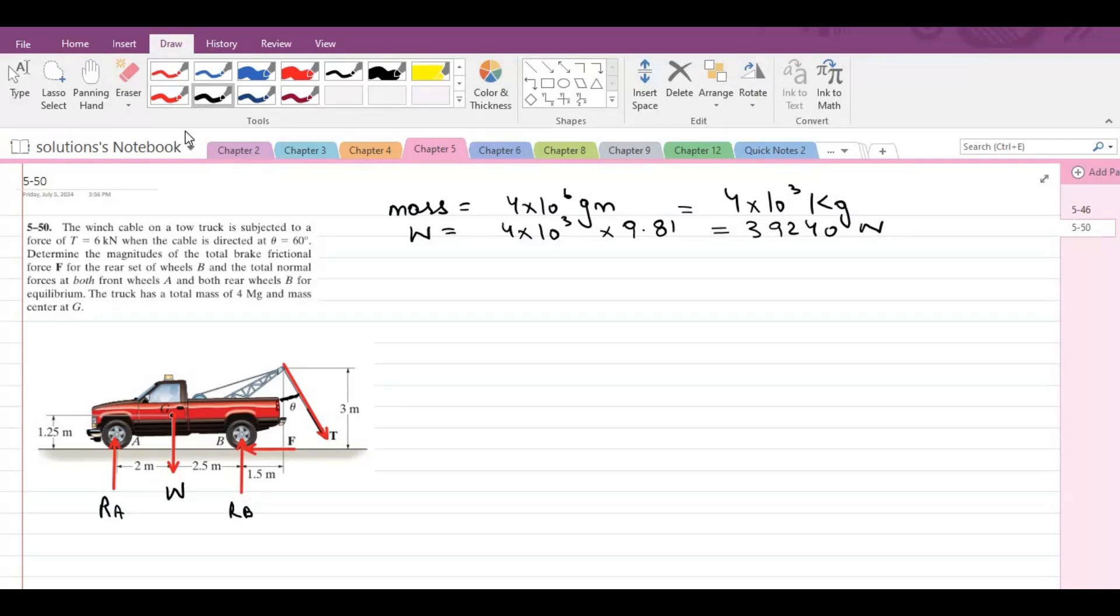Now we can apply the equations of equilibrium. So our first equation would be summation of forces in y direction equals to 0. I am considering up direction as positive. So we have the normal reaction at points A and B minus the weight W. And if I break this tensile force into its components, it has one component in the negative y direction and one component along the positive x direction. This is T cos theta and the horizontal component is T sin theta.